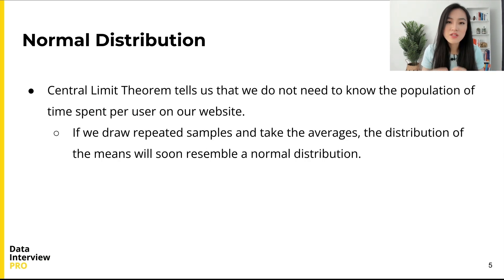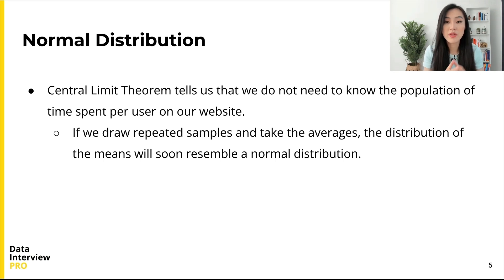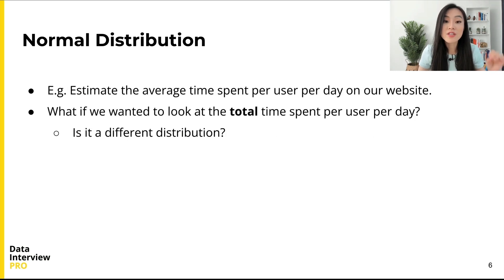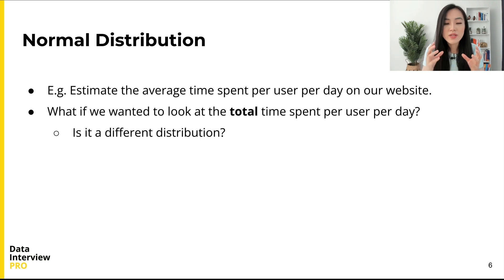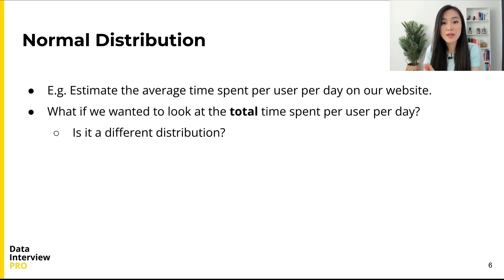It is a normal distribution, because of the central limit theorem, which tells us that we do not need to know the distribution of the population — if we draw repeated samples and take the average, the distribution of the sample means will resemble a normal distribution. Now what if instead of the average time spent per user per day, we want to look at the total time spent by all users per day? That is, we sum up all the time spent across all users for a day. On a graph, the x-axis is the total time spent per day across all users and the y-axis is the frequency. Is it a different distribution?